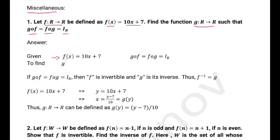Given f(x) = 10x + 7 and g∘f = f∘g, we need to find g that satisfies this condition. If g∘f = f∘g, then we know f is invertible and g is its inverse. Therefore, g is nothing but f inverse.